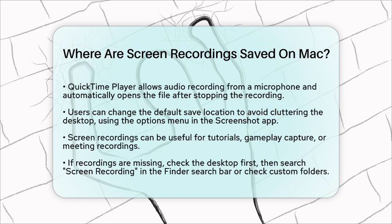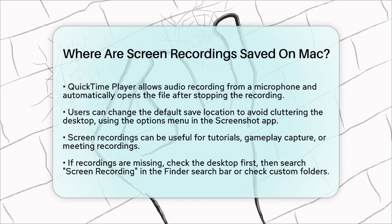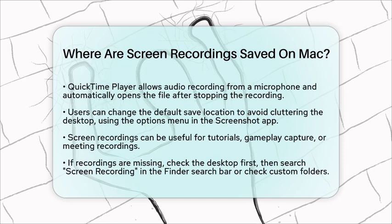If you ever have trouble finding your recordings, start by checking your desktop. If they are not there, try searching for Screen Recording in the Finder search bar, or look in any custom folders you may have set as the save location. This should help you locate any recordings you might be missing.